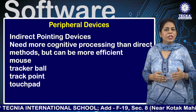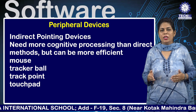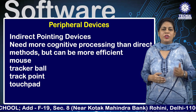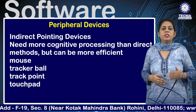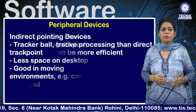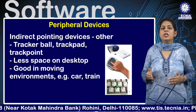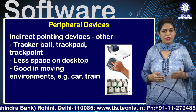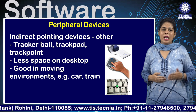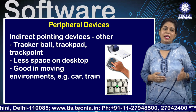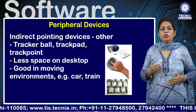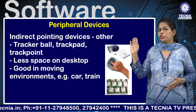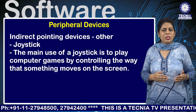Indirect pointing devices require more cognitive processing than direct methods but can be more efficient. Examples include mouse, trackball, track point, and touch pads. Other indirect pointing devices like trackball, track pad, and track point take up less space on the desktop and work well in moving environments such as a car or train, as shown in the diagram.